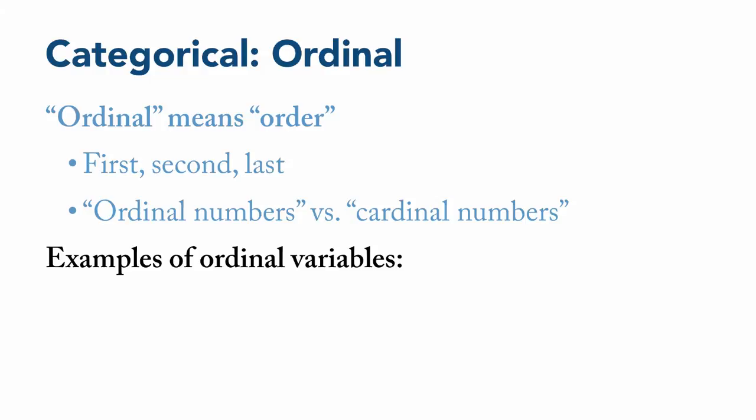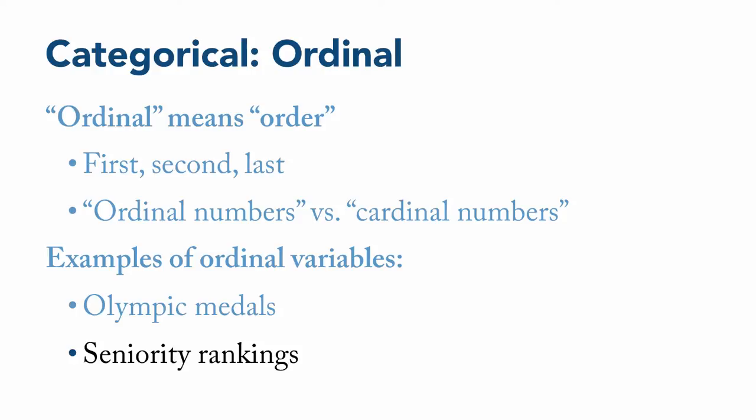A couple of examples of ordinal variables include things like Olympic medals, where gold goes to first place, silver to second place, bronze to third place. Or maybe seniority rankings at a job, which for a college or university teacher can include lecturer, assistant professor, associate professor, and full professor, among others.